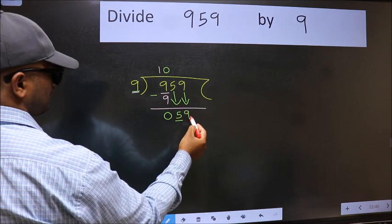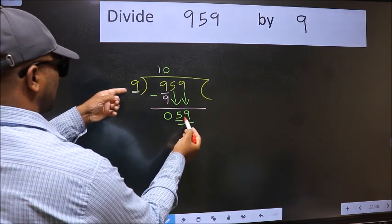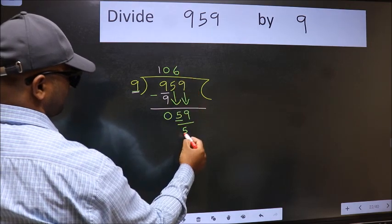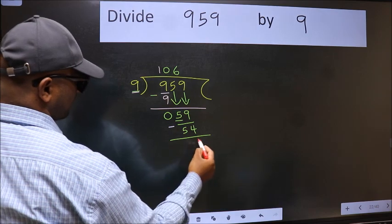Now 59. A number close to 59 in the 9 times table is 9×6=54. Now we should subtract, we get 5.